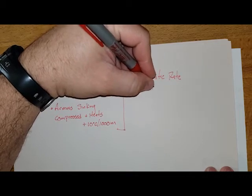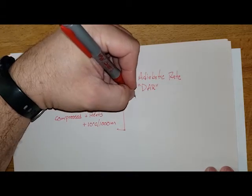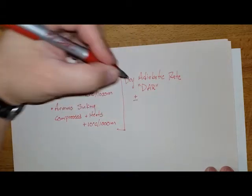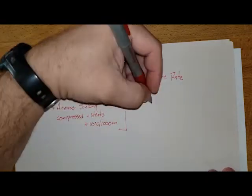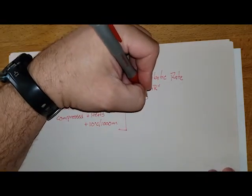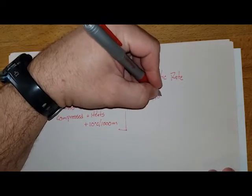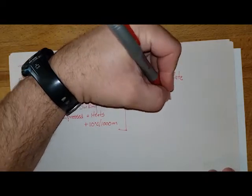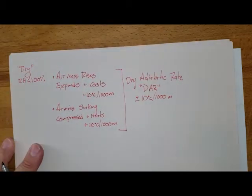We call this the DAR, and that has a value of plus or minus — whether it's getting warmer or colder — 10 degrees Celsius for every 1,000 meters that it either goes up or goes down.